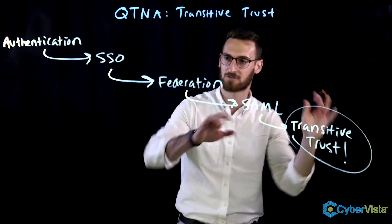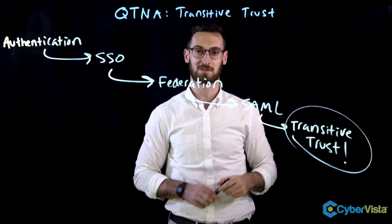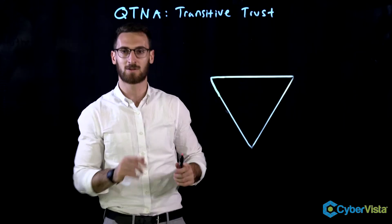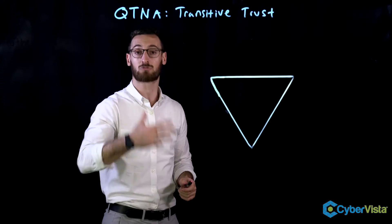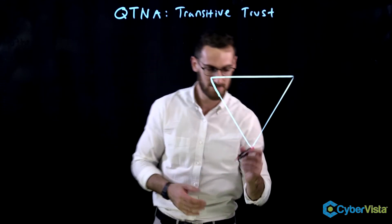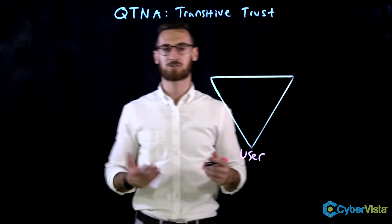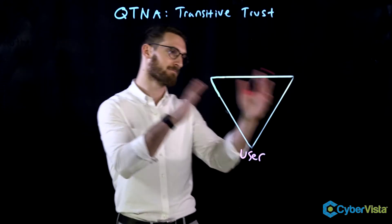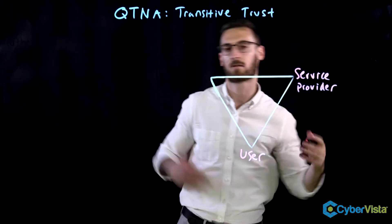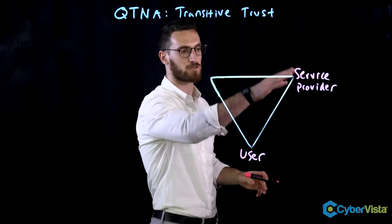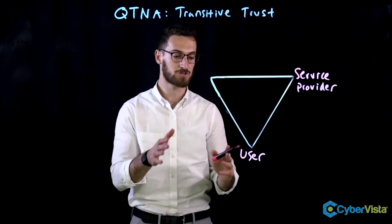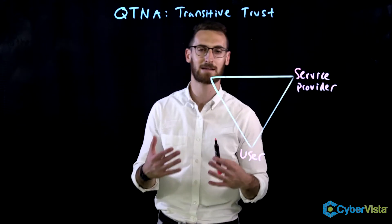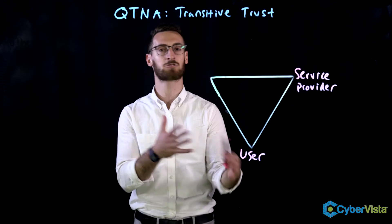Now that we know where transitive trust kind of hangs out, we can dive into it and look at some examples. This is not the upside down CIA triad — this is the transitive trust triangle. It's a triangle because there are three actors we want to think about. The first one is the user — just the person or entity that actually wants to access a resource. Where do they want to access the resource from? The service provider — the actor that has some service the user wants to access. So the user could go up to the service provider and say, hey, I want to access your service.